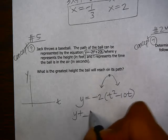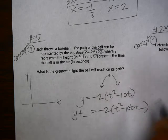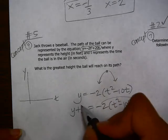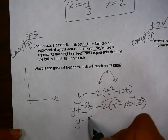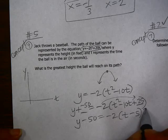And then complete the square. So b divided by 2 squared is 25. This would give me a negative 50 on the side. So y minus 50 equals negative 2, t minus 5 squared.